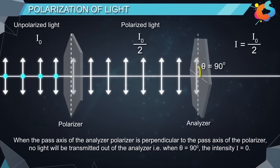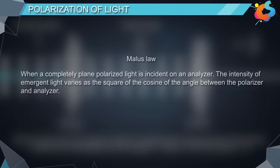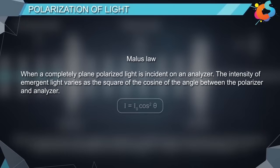Malus's law states that when a completely plane polarized light is incident on an analyzer, the intensity of the emergent light varies as the square of the cosine of the angle between the polarizer and analyzer. That is, I = I₀ cos²θ.